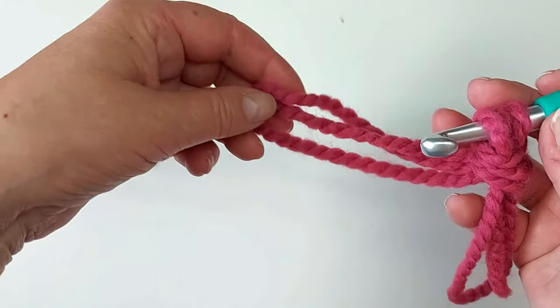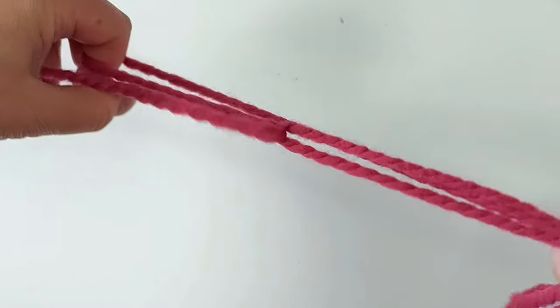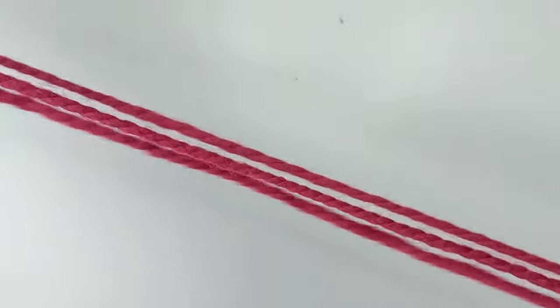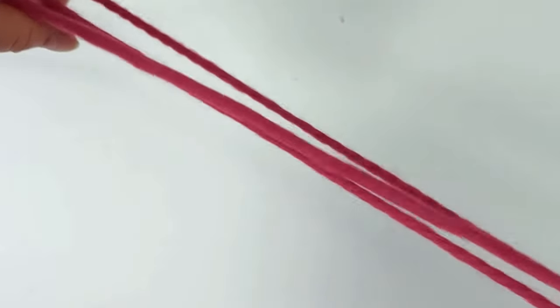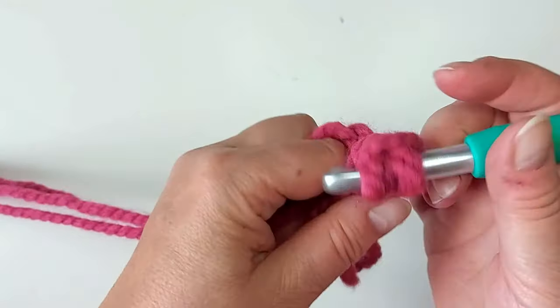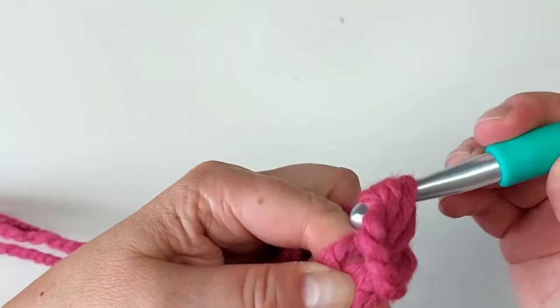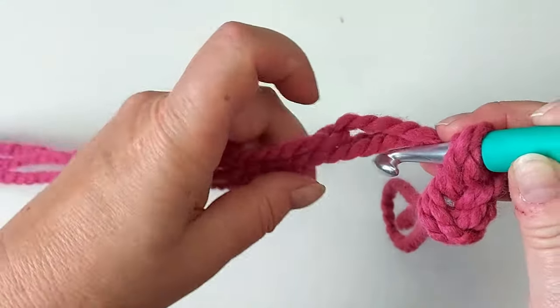And then of course each stitch takes more yarn too, so I'm already making a second loop here by putting it through there and pulling, and pulling like that. And then continuing to crochet whatever I'm going to make and here's the join.